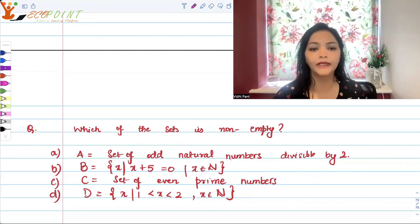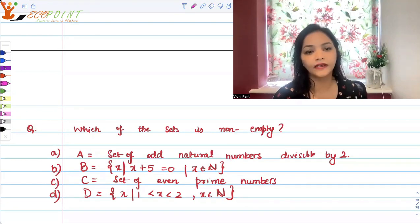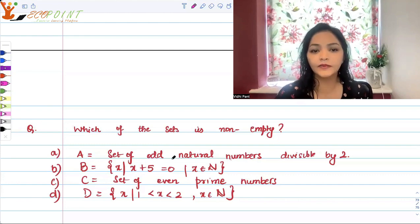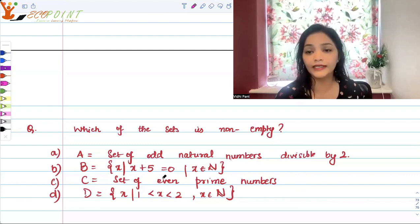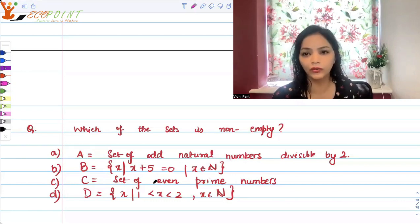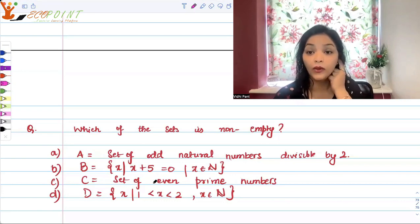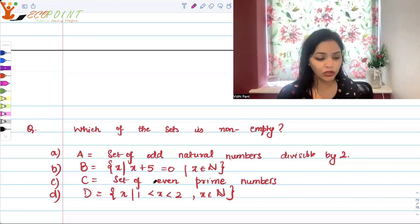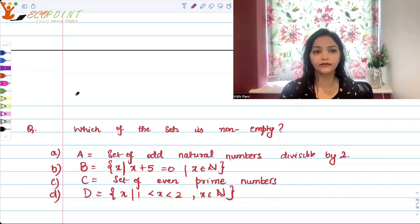B is the set of all x's such that x plus 5 is equal to 0 and x is a natural number. C is the set of even prime numbers and D is the set of all x's which are lying between 1 and 2 where x is a natural number. We have to tell which is non-empty.